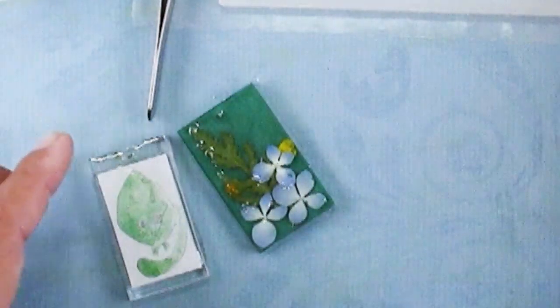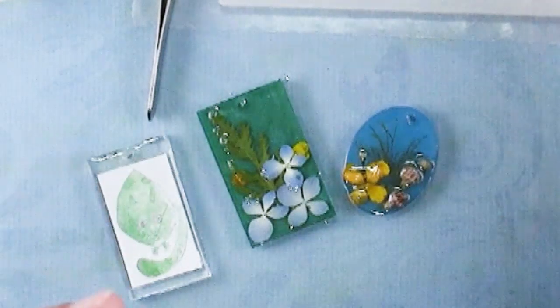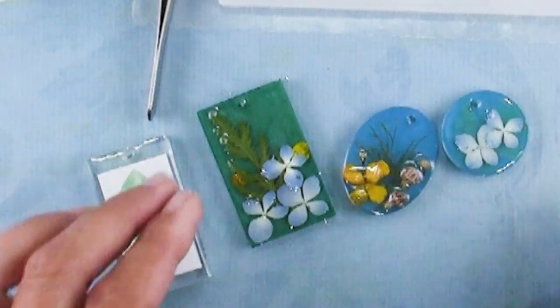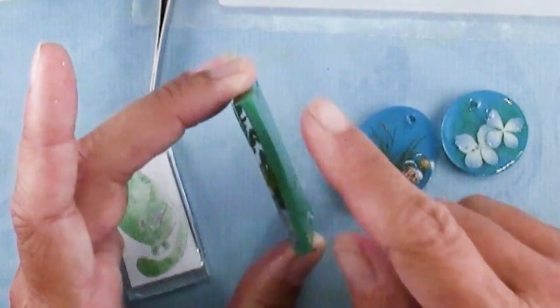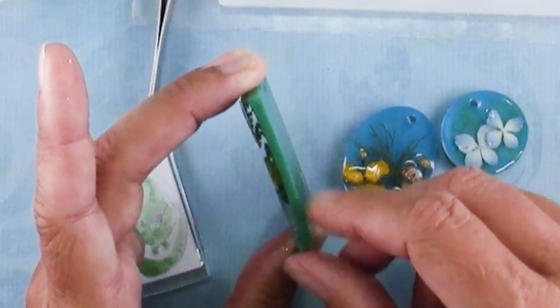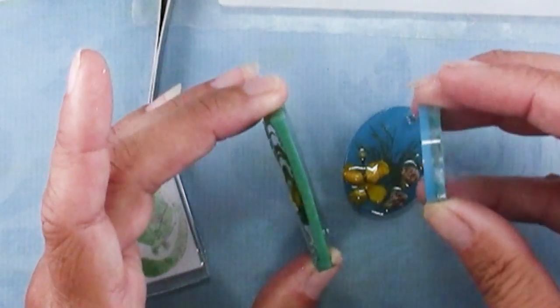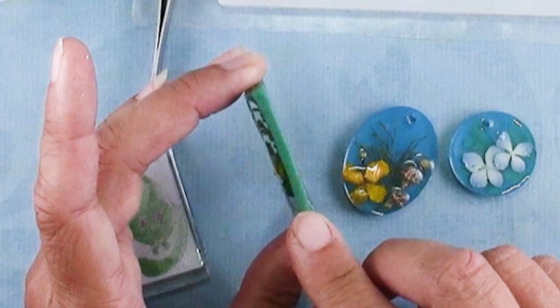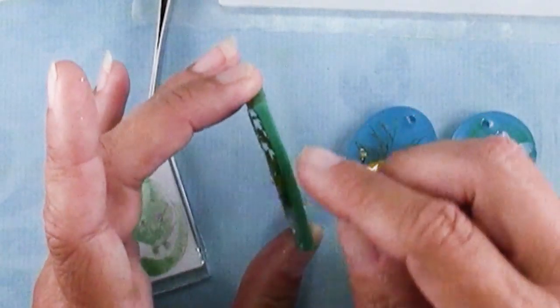These are pieces I made when I had leftover resin from another project. I mixed colorant like this green or this blue in with my resin and then filled the mold about halfway.